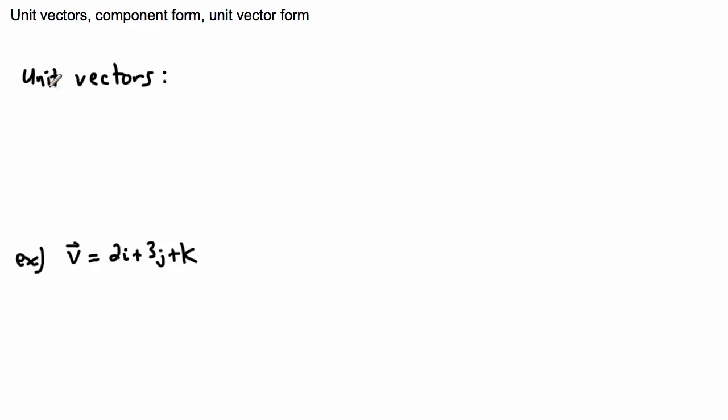Unit means one. So a unit vector is any vector with a length of one unit. That's it. A vector with a length of one unit. Now I haven't taught you how to find the length of a vector, but we'll be doing that soon.